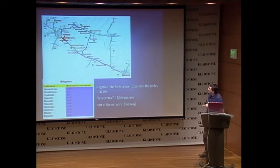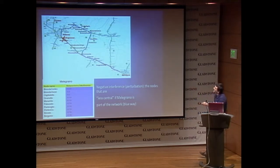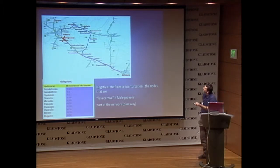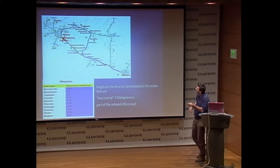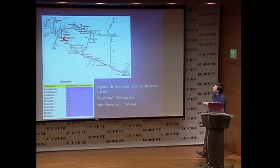Then there is a negative interference — here we have negative values. If you remove Milano, you have to take this alternative way. So if Milano is in the network, it has negative interference with respect to this other node — for this node it is better that Milano is removed. It has a negative perturbation on this node.